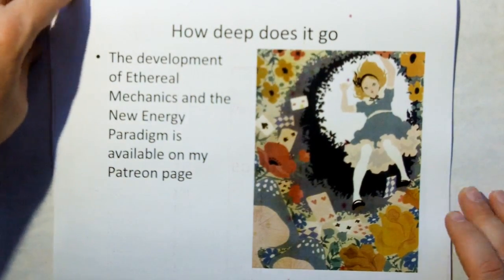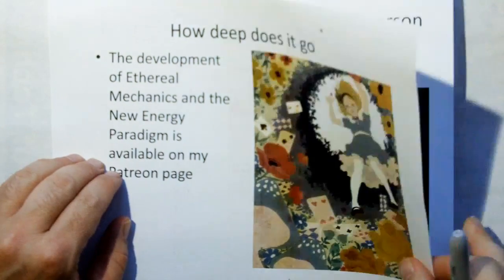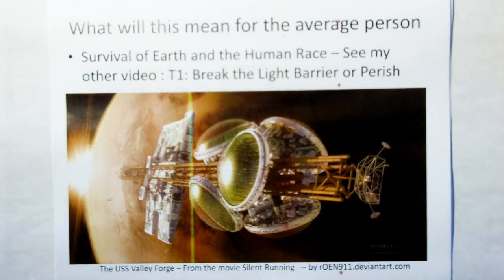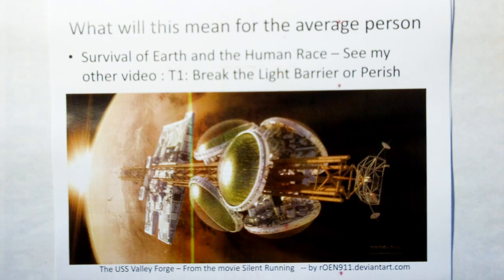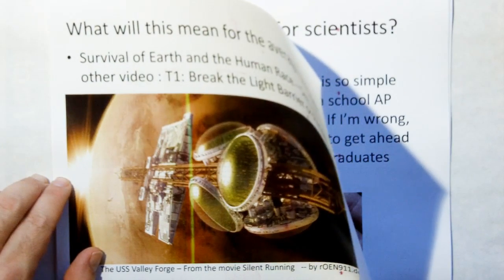How deep does the rabbit hole go? The development of ethereal mechanics and new energy paradigm is available only on the Patreon site, but there are videos available. Check out the T0 trailer for an overview. What will this mean for the average person? The survival of the human race and the earth. See my other video T1, break the light barrier or perish, which says unless we can break the light barrier by a factor of 500, there is no way the human race is going to persist and survive.